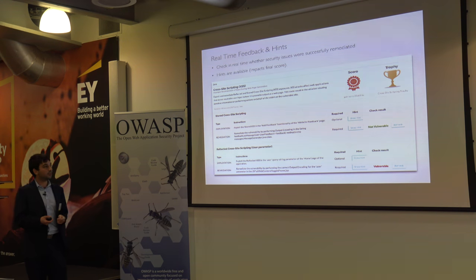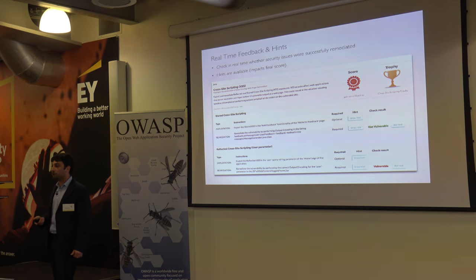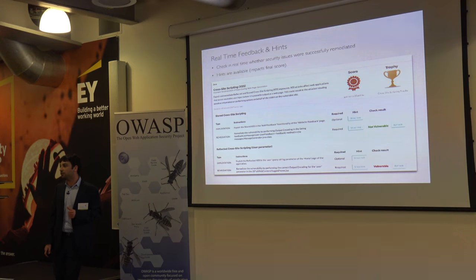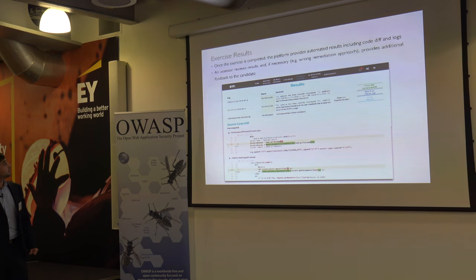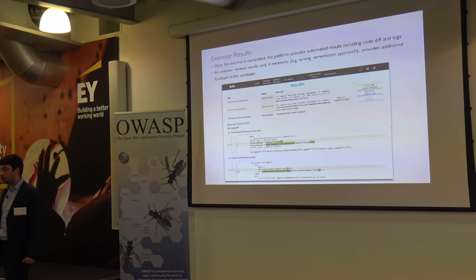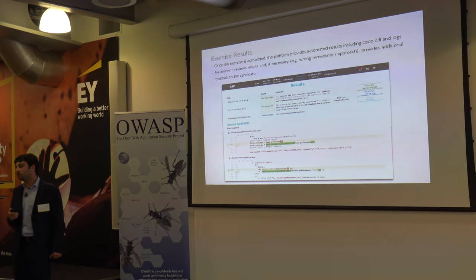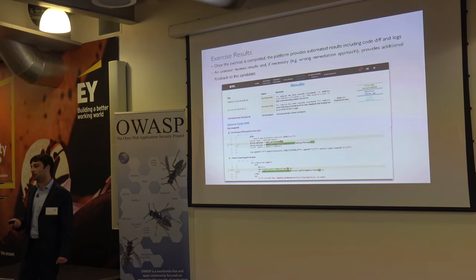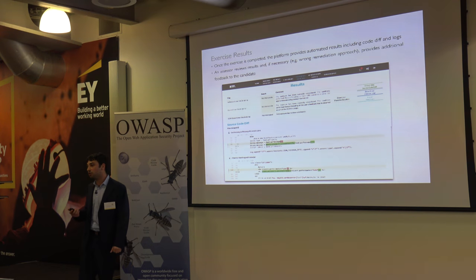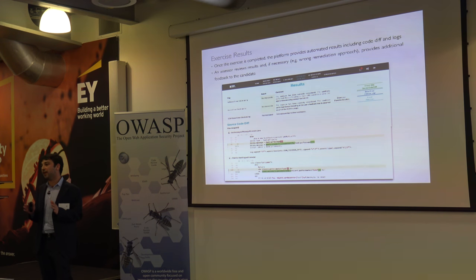While doing the exercise, the candidate can click the refresh button and an automated checker will provide live results on whether the issue has been remediated or not. If the candidate is stuck, there is also a possibility to get a hint, though it will affect the final score. At the end of the exercise, the platform provides the results of the automated checker, all the logs for attacks the candidate tried to execute, and the full code diff between the original vulnerable application and the code edited by the candidate.